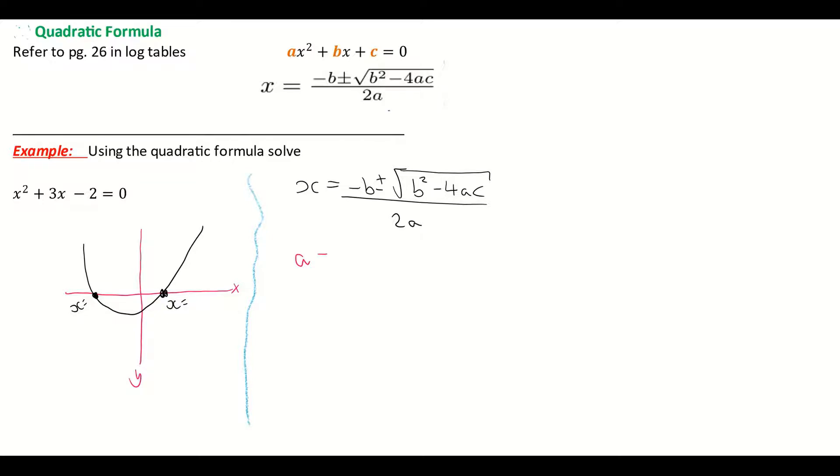So my a is the number in front of the x squared, which is not shown on my particular quadratic, but you know that it stands for 1. You don't need to show the 1. Think of like saying I have one calculator. I have a calculator. You don't need to say the 1. My b is the number in front of the x, which is 3. And my c is the constant or the number on its own, which is negative 2. So I'm going to need those 3 values.